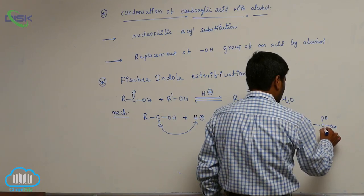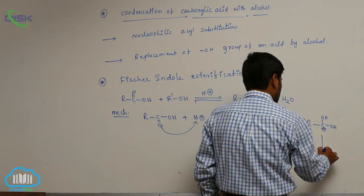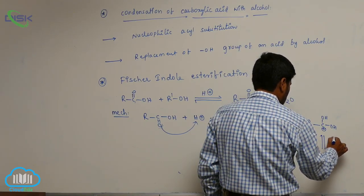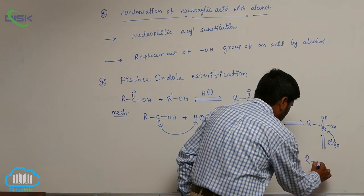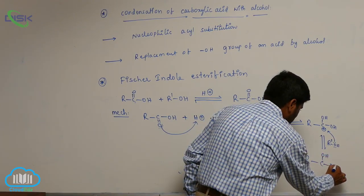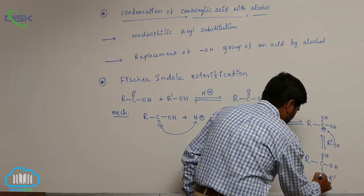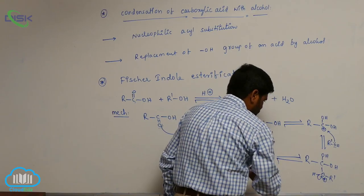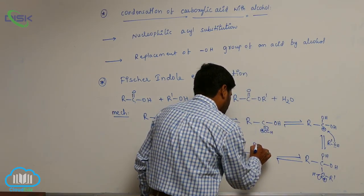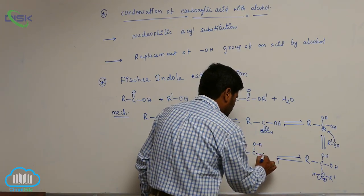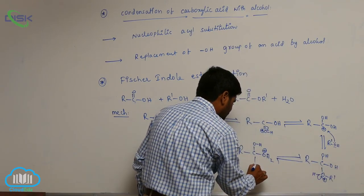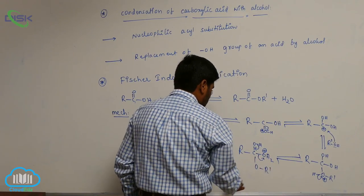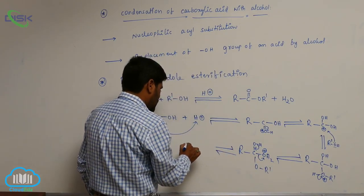Now it converts to a species with OH and also OH, which carries a positive charge. This again reactivates with an alcohol. Here is OH and also OH, then R-dash like this carries a positive charge. Loss of H+ from here, now it converts, and H+ comes on this, converting it into OR-dash.